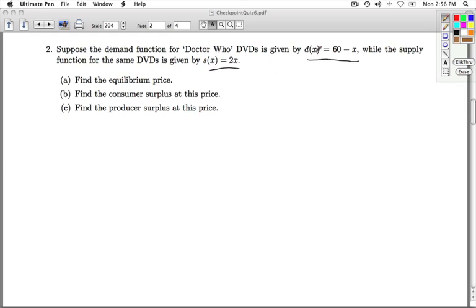So the demand functions are going to be the amount of DVDs sold. The D(x), since we're not given specific units, we can imagine these are dollars. So D(x) is dollars per DVD to sell x DVDs, and then S is going to be dollars per DVD to make x DVDs.